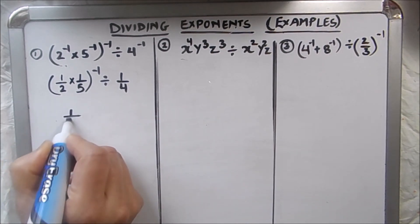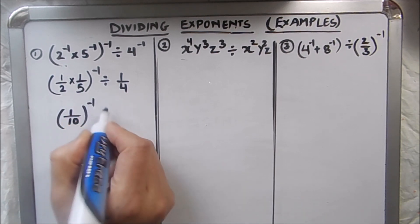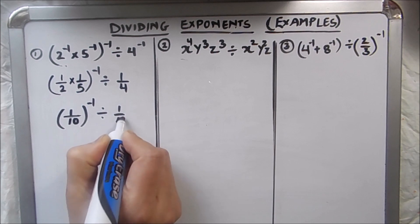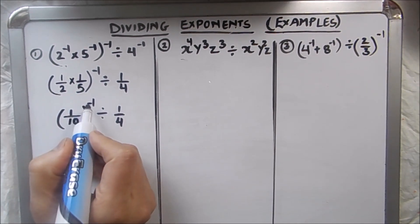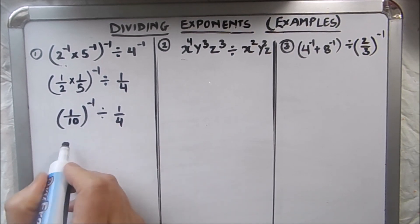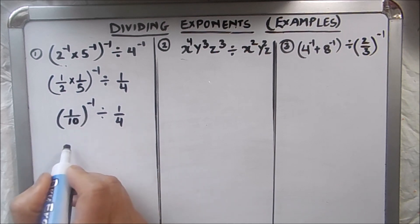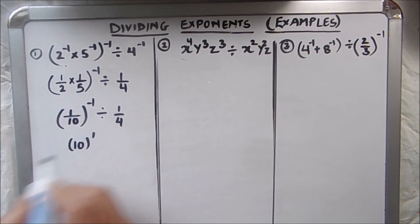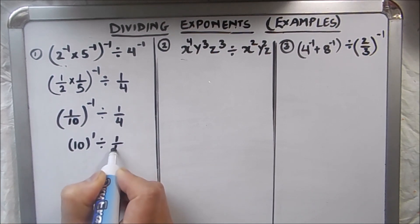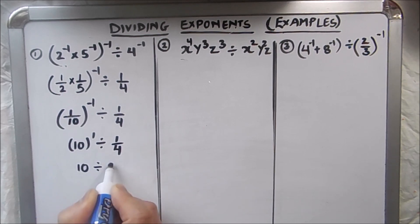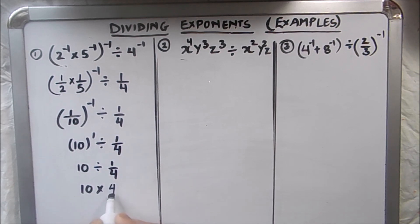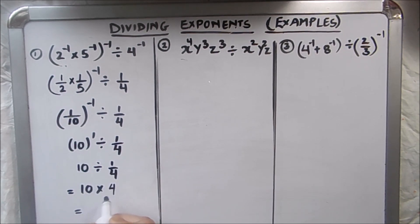This gives us 1 over 10, to the power minus 1, divided by 1 over 4. Now to make this exponent positive again, we apply the negative exponent rule and take the reciprocal, giving us 10 to the power 1, divided by 1 over 4 — that is, 10 divided by 1 over 4. When we divide two fractions we take the reciprocal of the divisor, so this becomes 10 times 4, which equals 40. So our answer is 40.